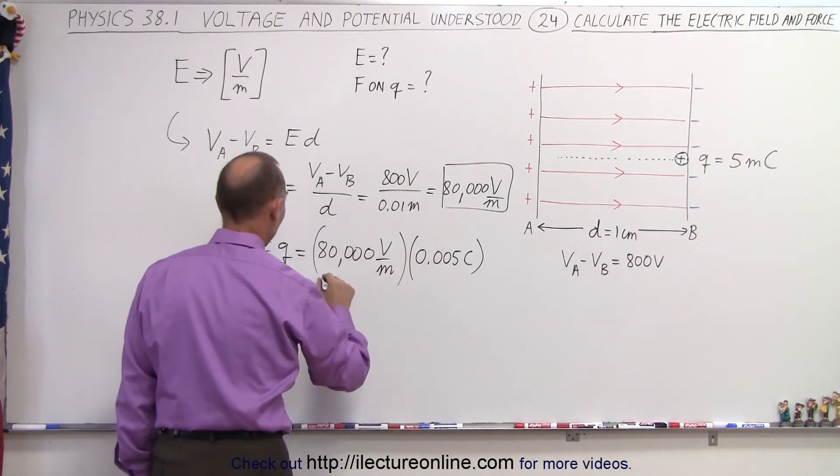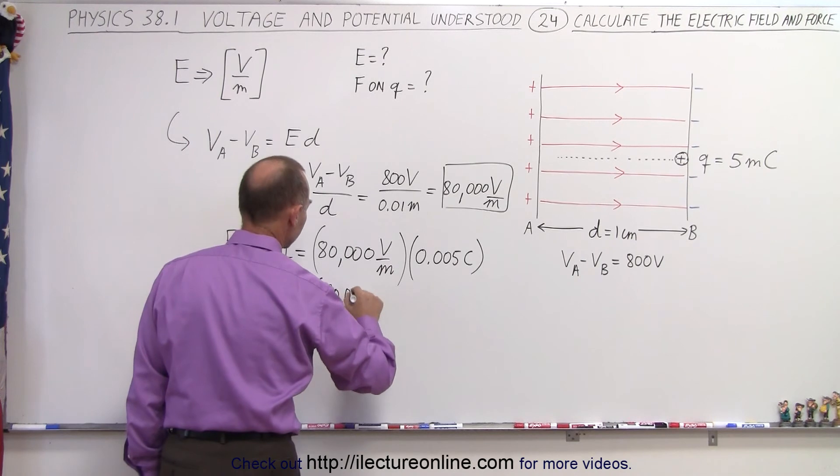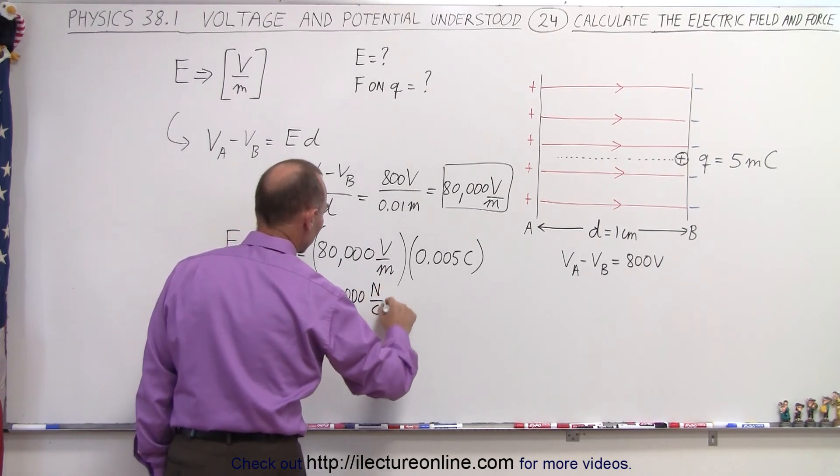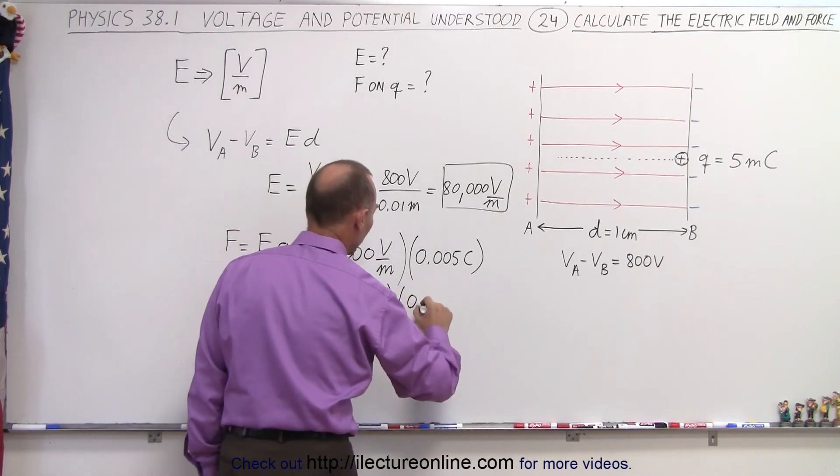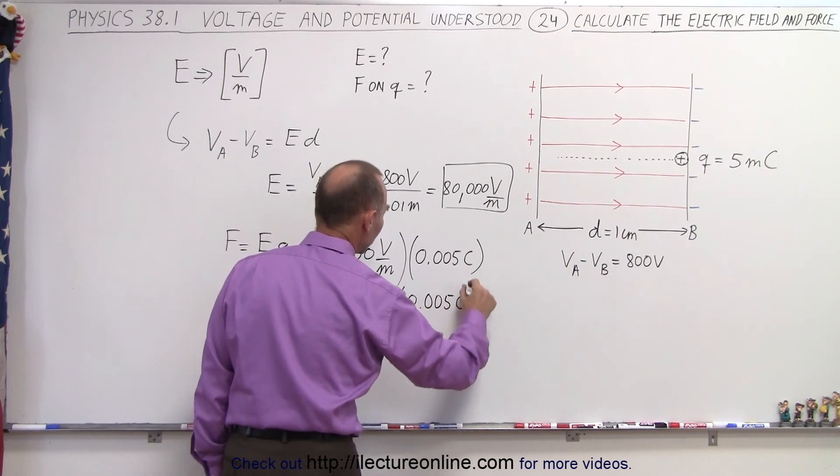So let's write this as 80,000 newtons per coulomb times 0.005 coulombs.